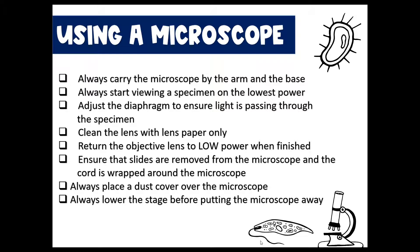Starting with low power is a good rule of thumb because it takes a little while to learn how to use a microscope. A lot of students want to start with high power objective, and it takes forever to get it into focus. If you start with low power and work your way up, the process is much easier. You'll also want to adjust the diaphragm to ensure light is passing through the specimen — if the image looks really dark, a simple adjustment of the diaphragm will help.